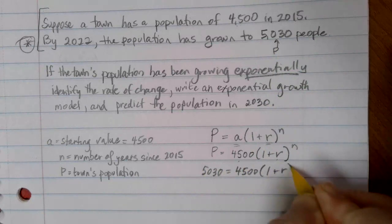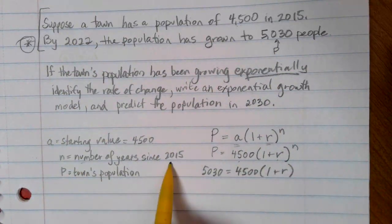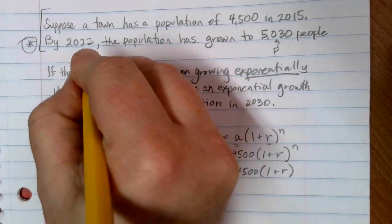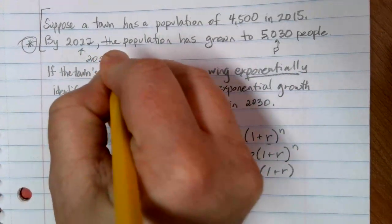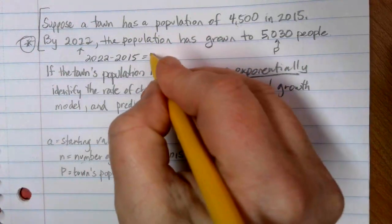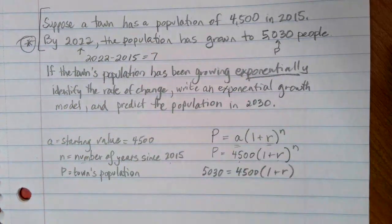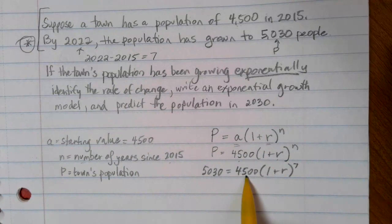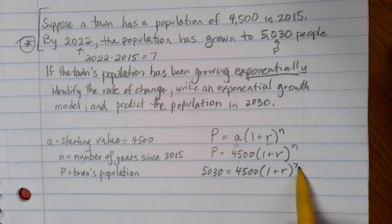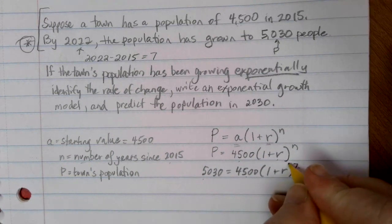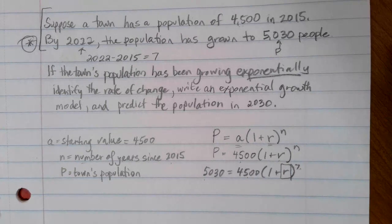Still don't know R. And my N value is going to be the number of years since 2015. I'm told what's happening in 2022. So if I do 2022 minus 2015, I find that that is 7 years later. So here's my starting value, 7 years later the population is 5,030. And now the only unknown value that I have is this R, so I can use algebra to solve that equation.